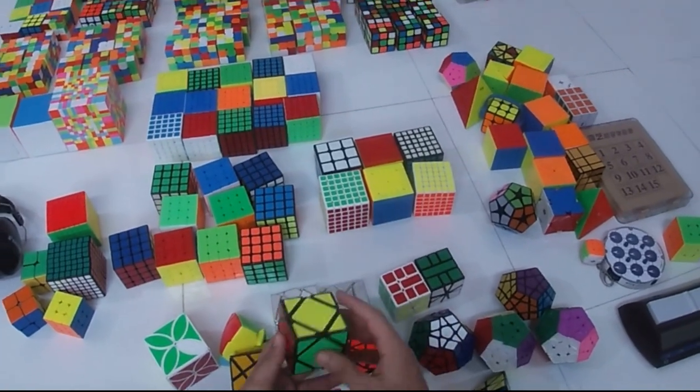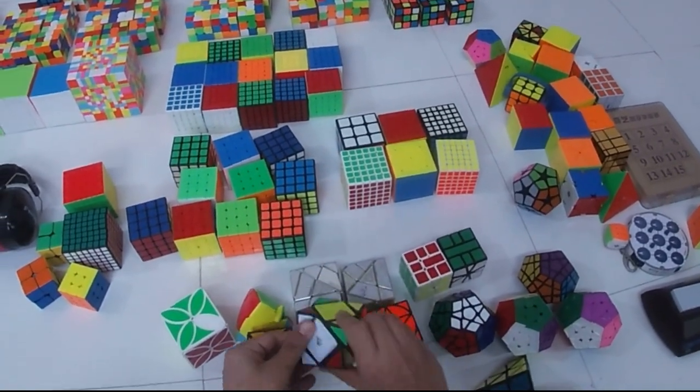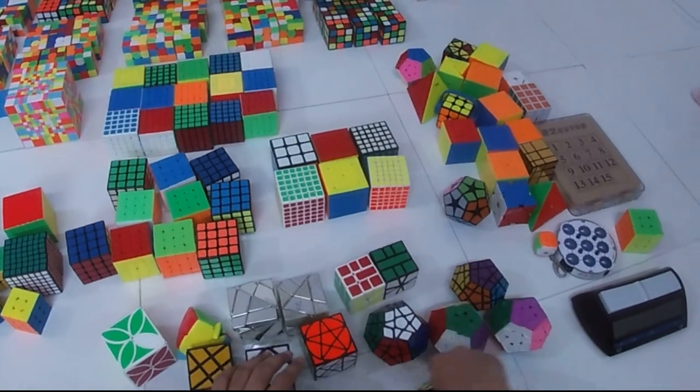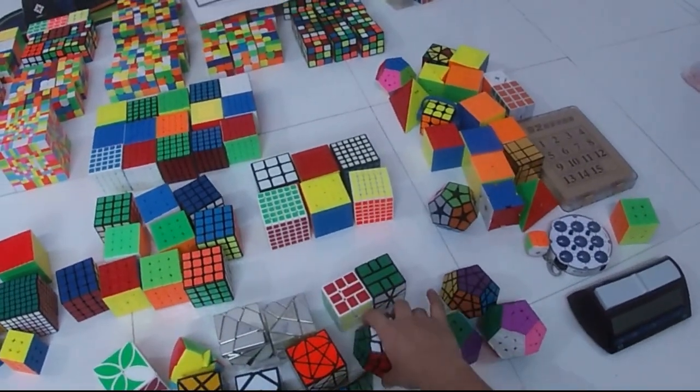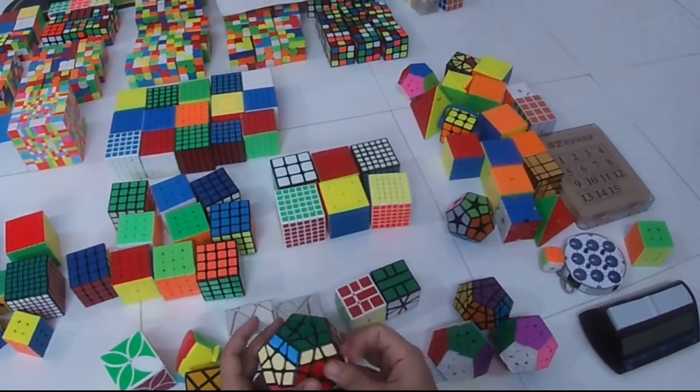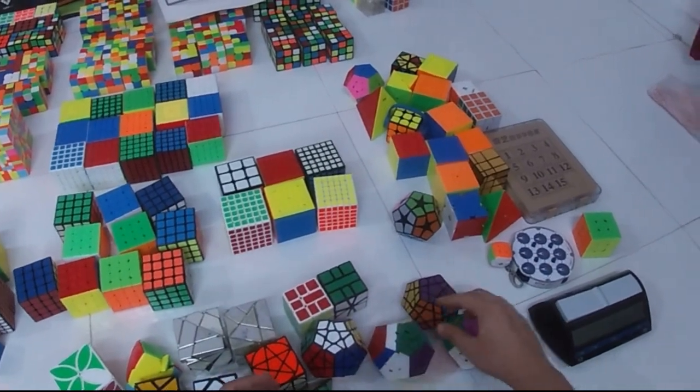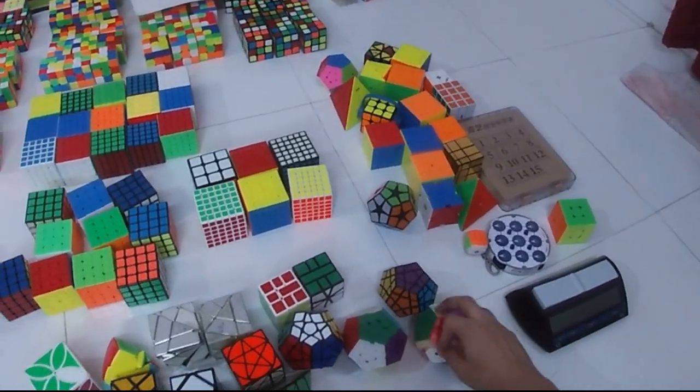Here's a random cube that I have as an extra. Here is a random pyramid MoYu pyramid. Here is a mega minx that I don't use, here's another mega minx that I don't use.